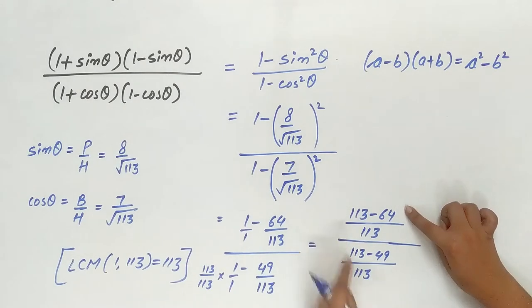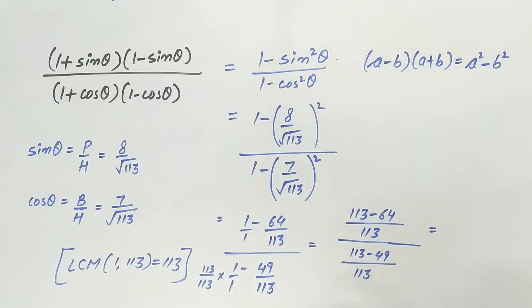113 minus 64 is, to the calculation, 49 divided by 113. Now, 113 minus 49 is 64. Divided by 113.